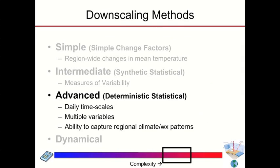Moving on from synthetic statistical methods to more advanced methods, so-called deterministic statistical methods, we're going to start thinking about incorporating GCM data at daily timescales using multiple variables — more than just monthly temperature and precipitation. We're also hoping to get past some of the limitations of an interpolation-based approach, so methods that can start to capture regional climate and weather patterns, moving more towards what dynamical downscaling could do, but statistical in nature.